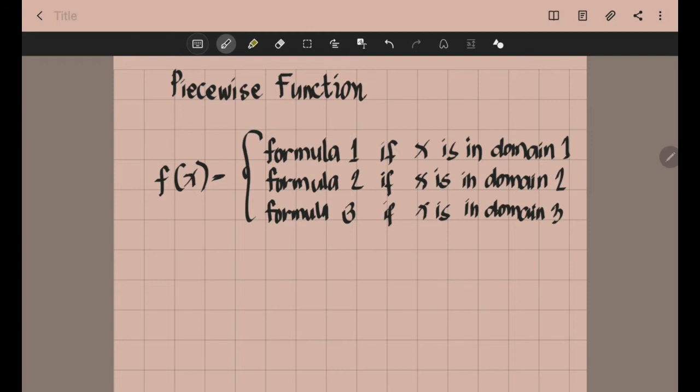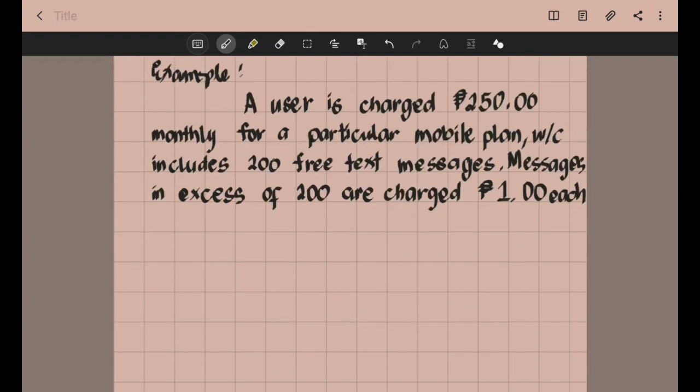Let us have an example. A user is charged 250 pesos monthly for a particular mobile plan, which includes 200 free text messages. Messages in excess of 200 are charged 1 peso each. Let us represent the monthly cost for text messaging using the function T of M, where M is the number of messages sent in a month.